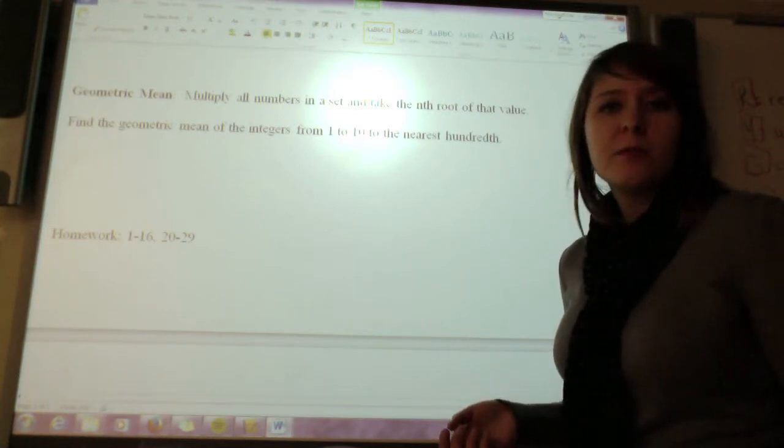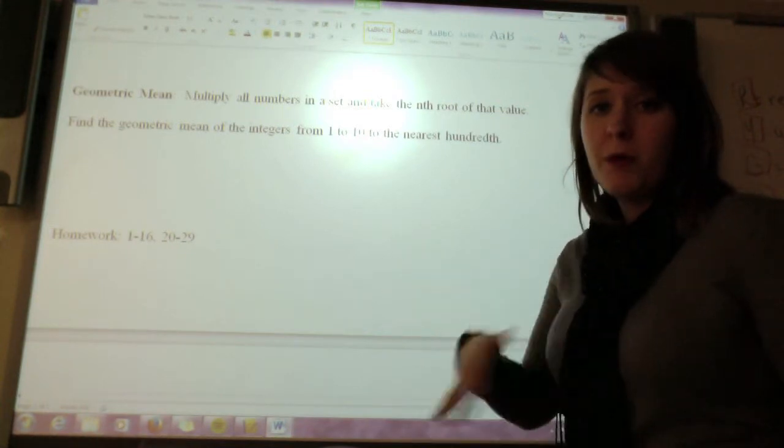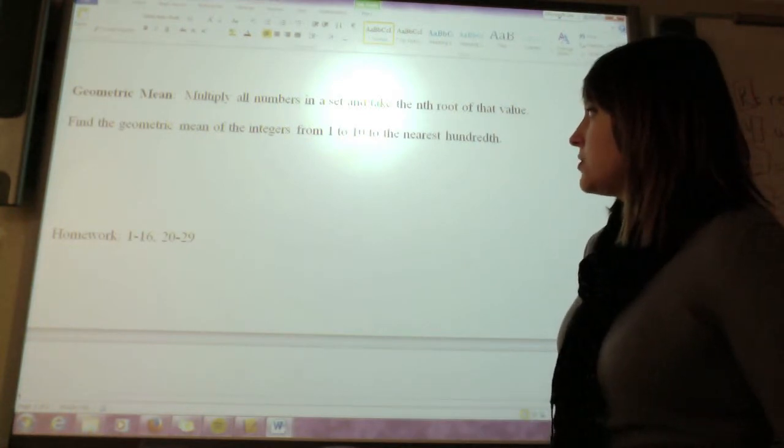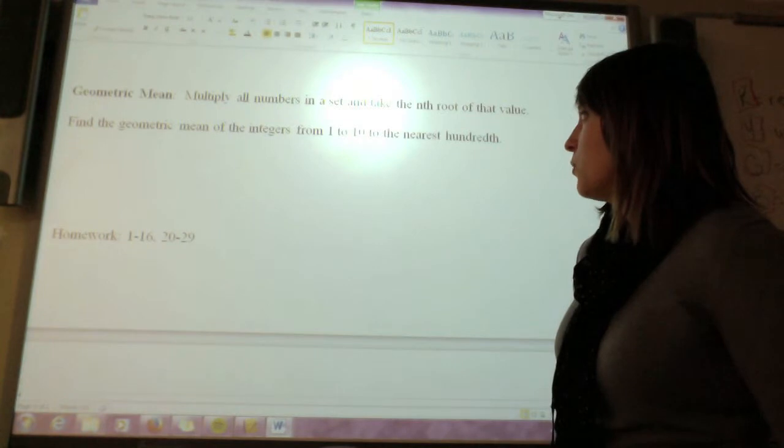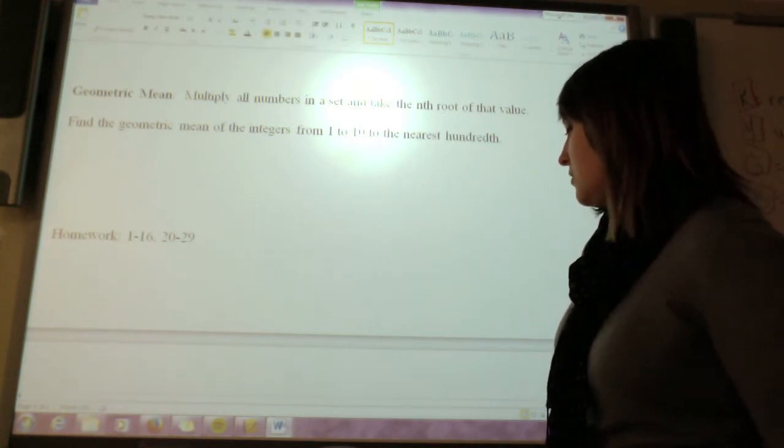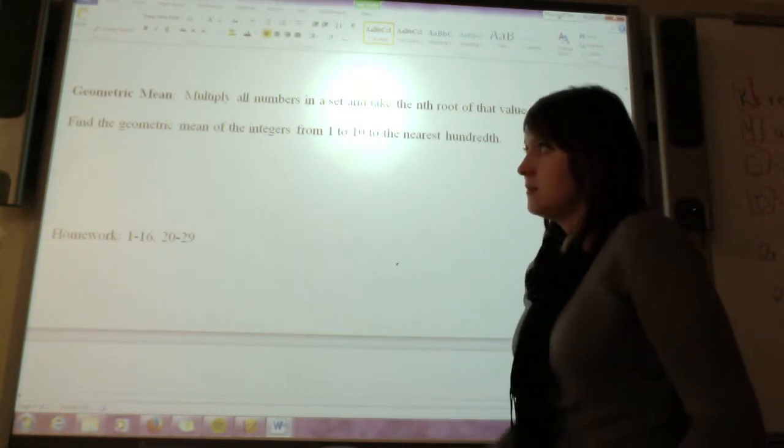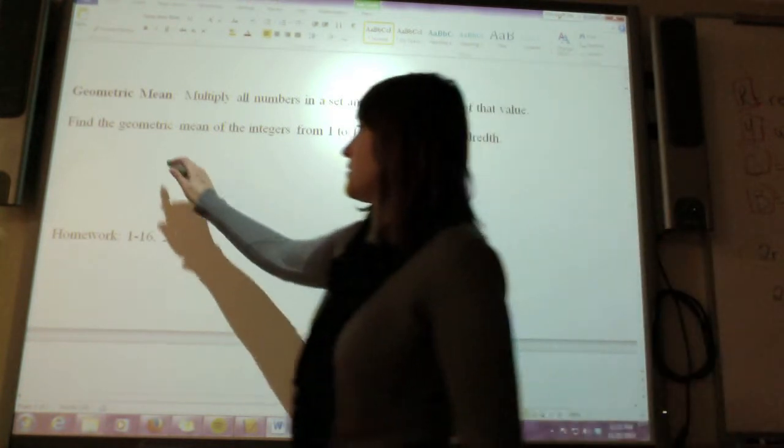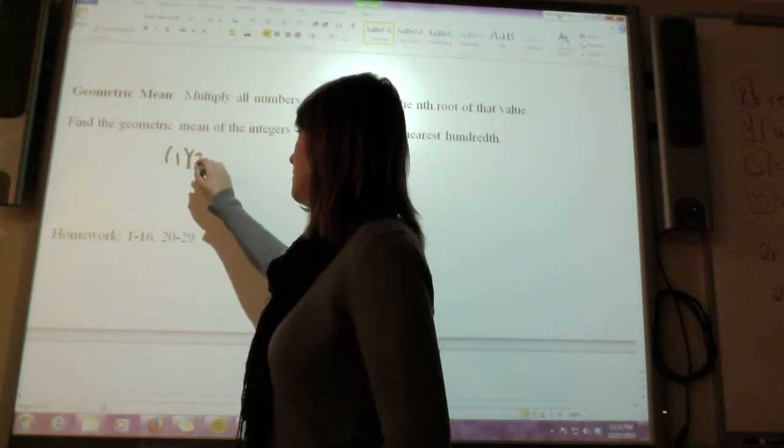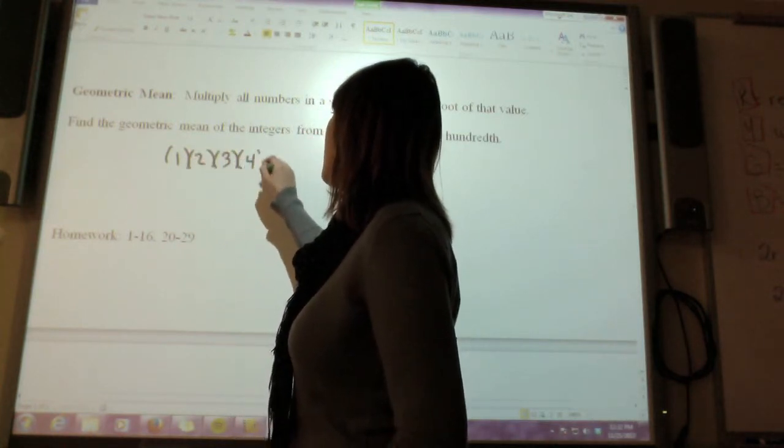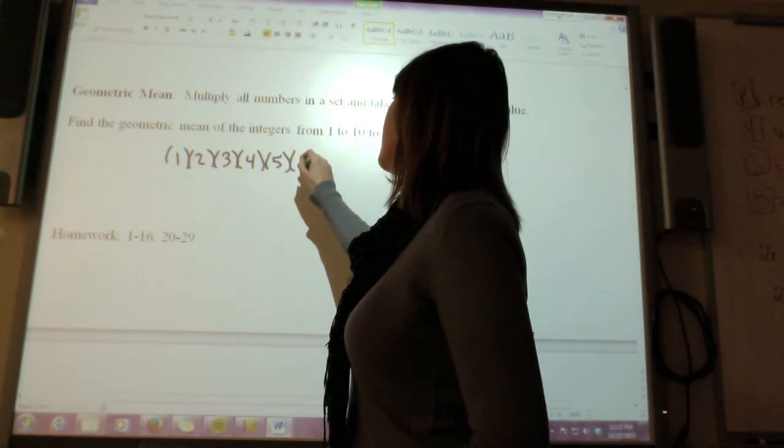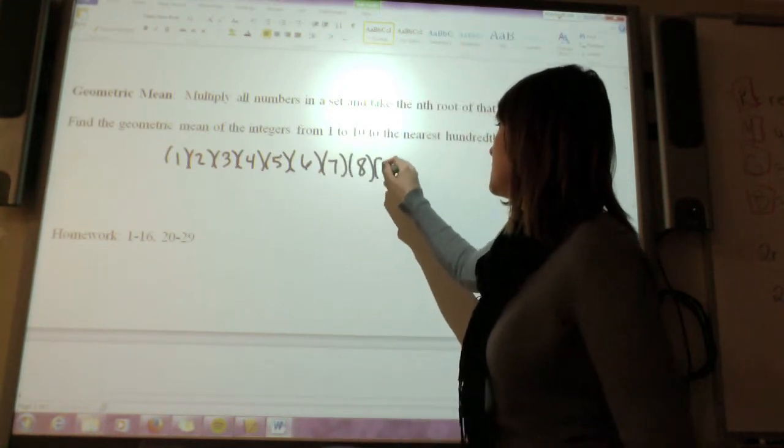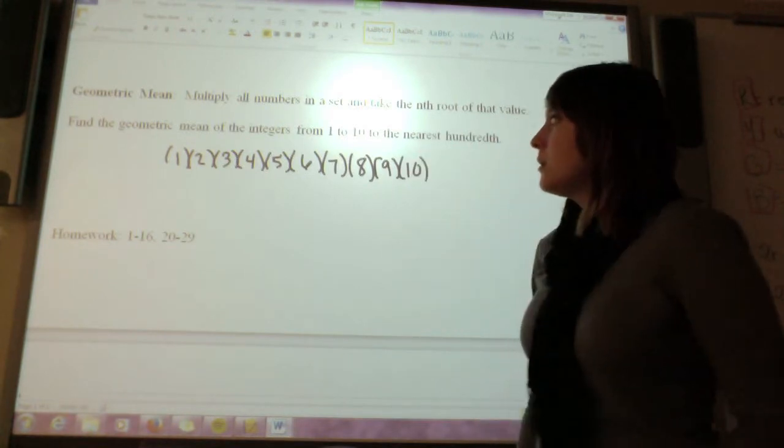I'd multiply them all together, and then I'd take the fifth root of that number. So if I want to find the geometric mean of the integers from 1 to 10 to the nearest hundredth, first of all, I need to multiply all those numbers together. So I'm doing integers from 1 to 10. So I'd have 1 times 2 times 3 times 4 times 5 times 6 times 7 times 8 times 9 times 10.